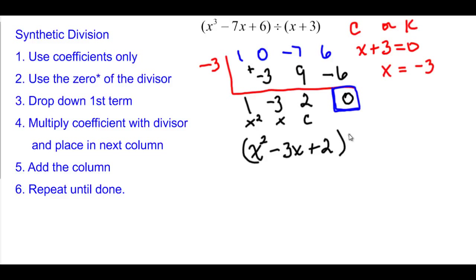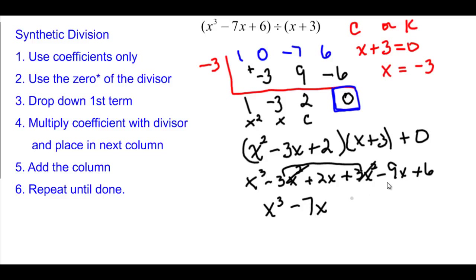And if we were to take that times our x plus 3, just to check one more time, add the remainder, which is just 0. So x cubed looks good. 3x squared and negative 3x squared are going to cancel each other out, and we had no x squared term. Minus 7x, still looking good, plus 6.